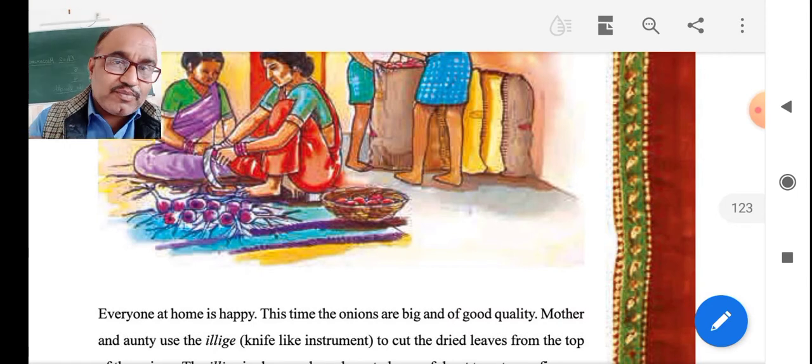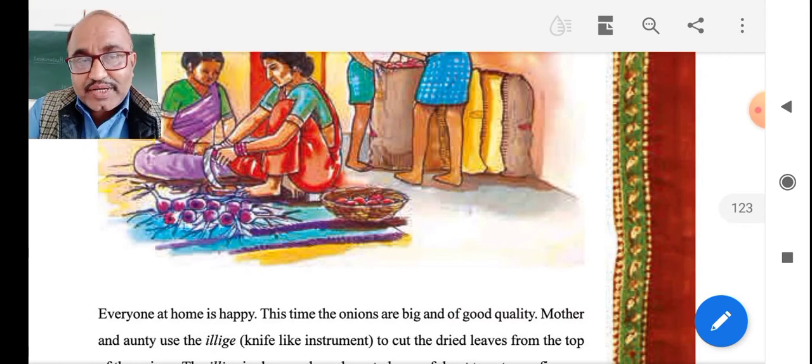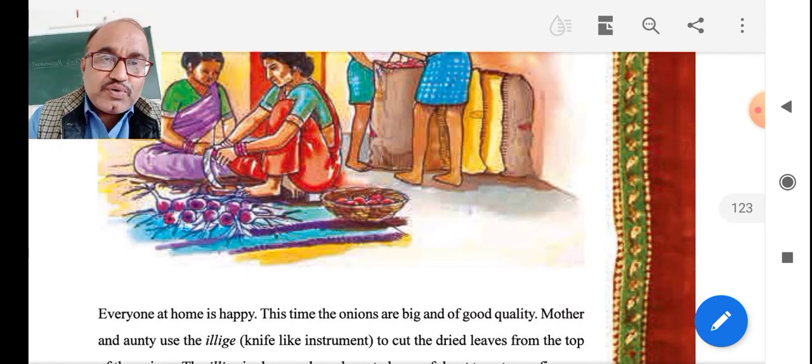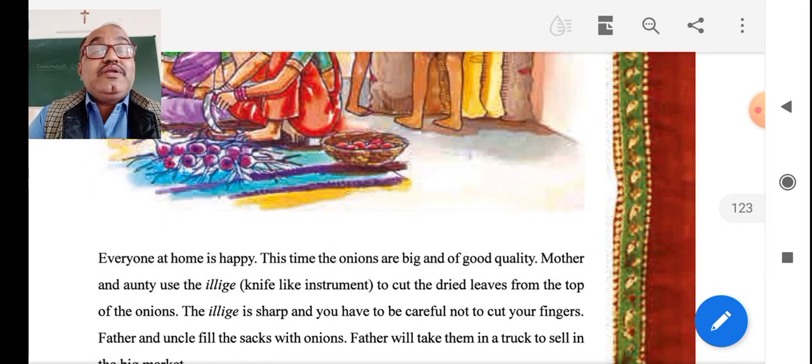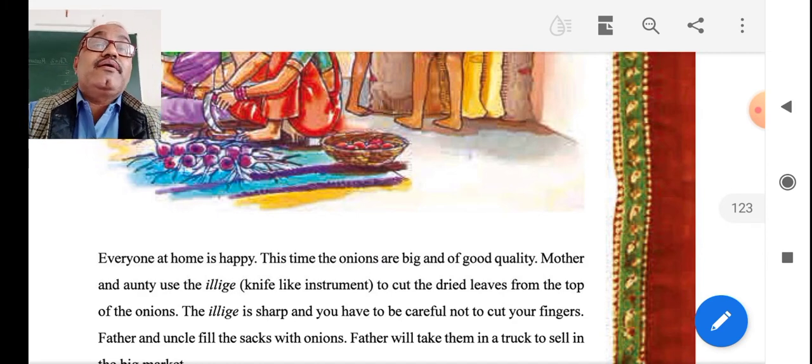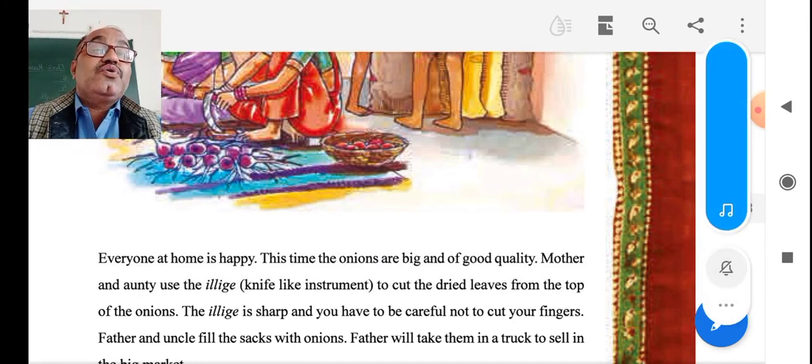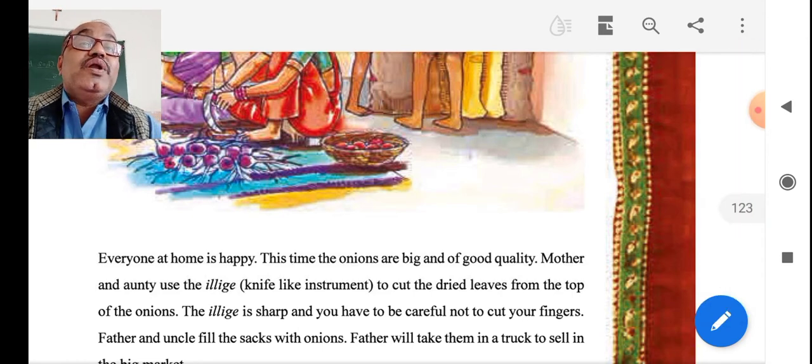Friends, you know, Mova is very popular for onion. So, we know the onion crop systems vary properly. This time, everyone at home is happy, and the onion crop also has good quality.